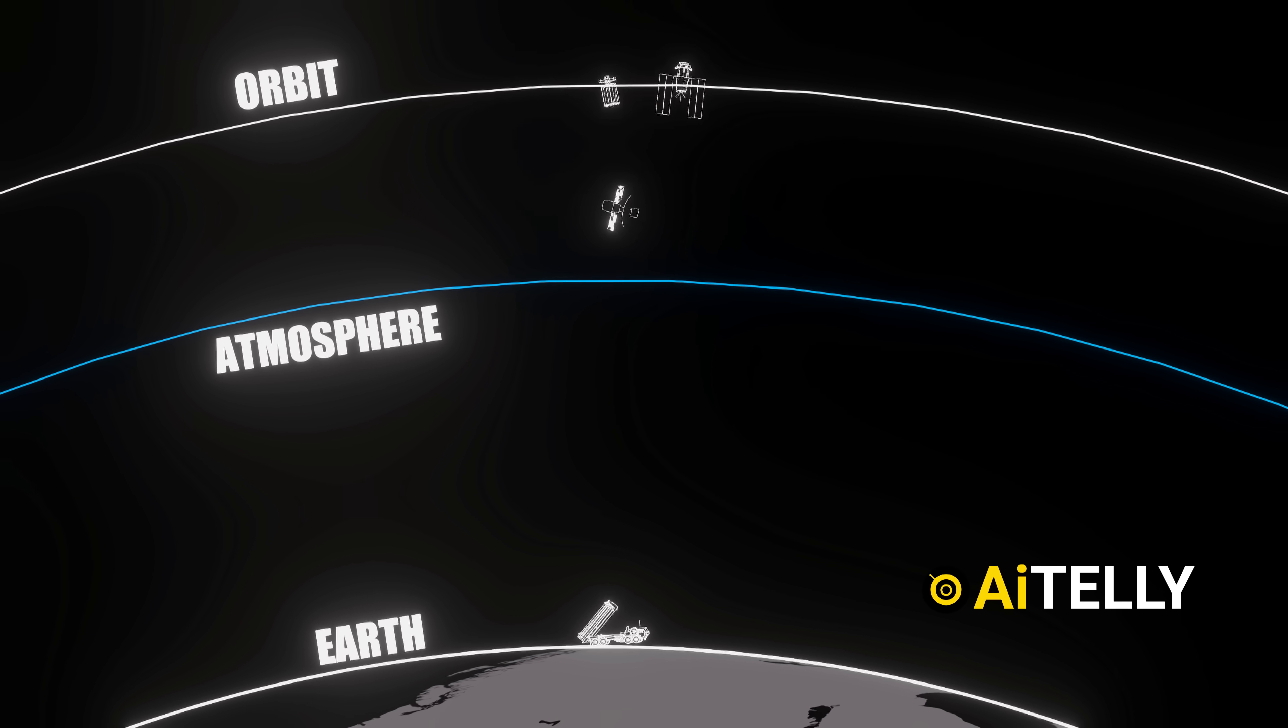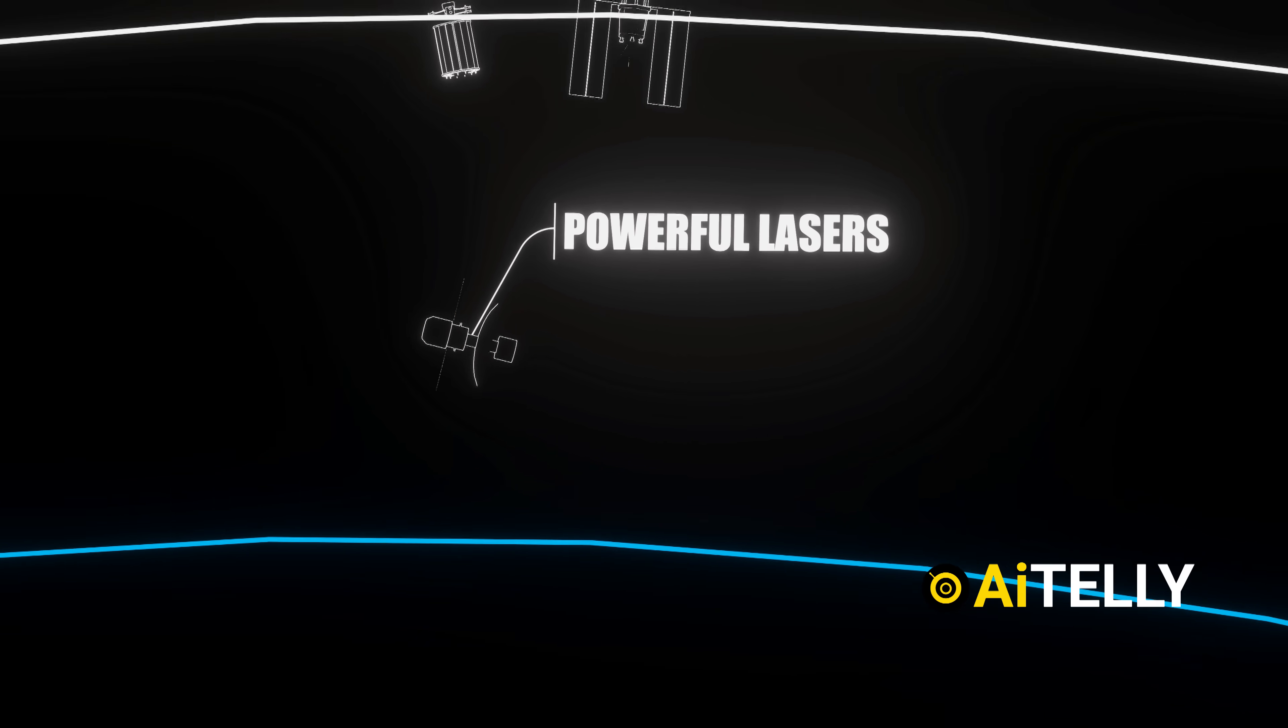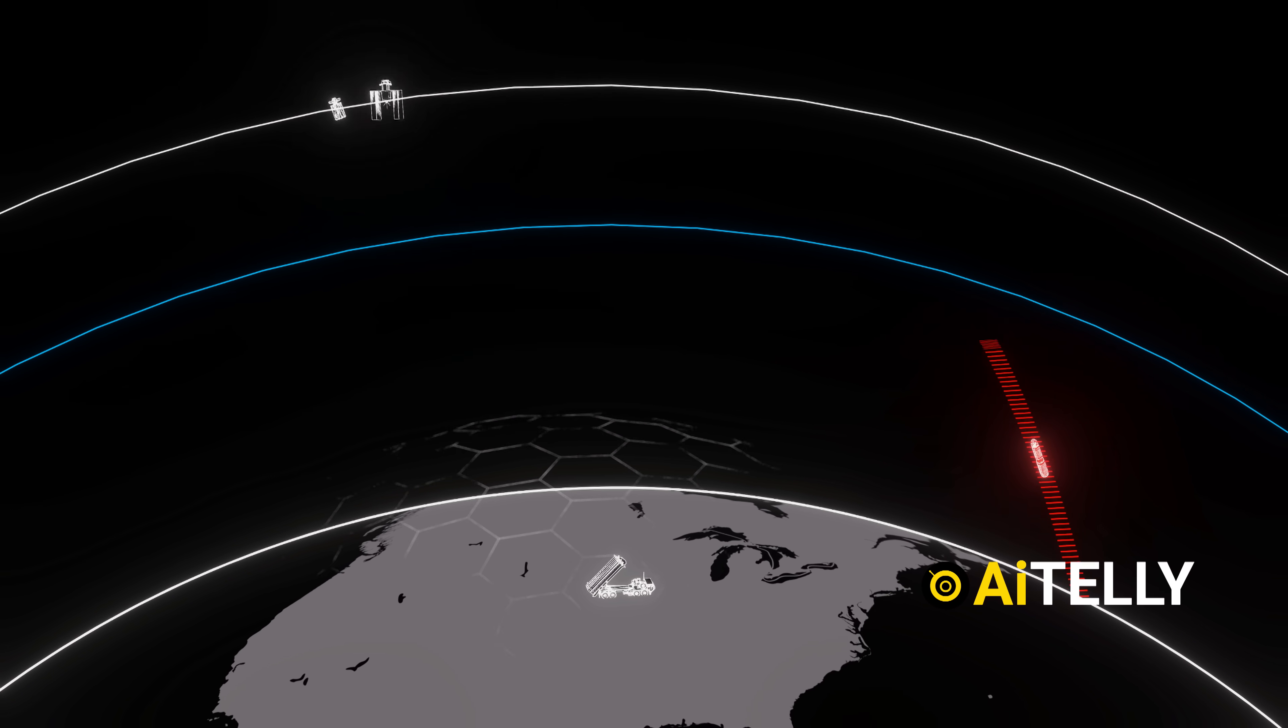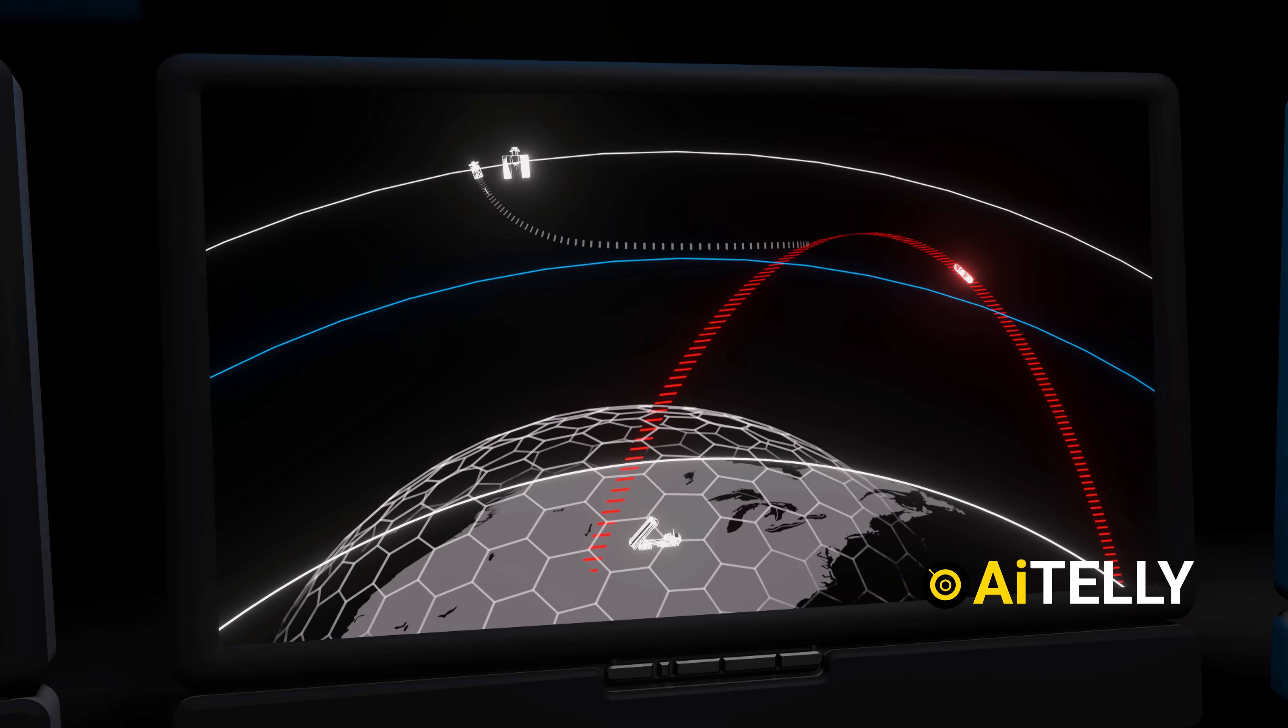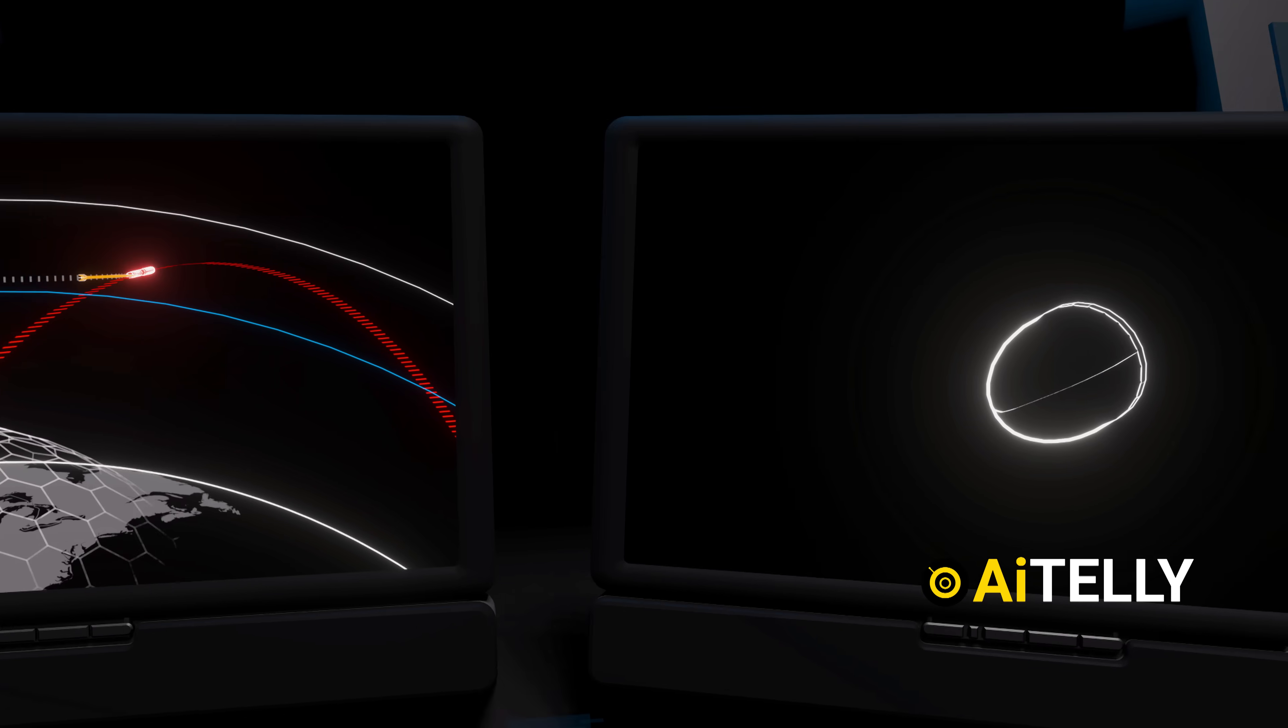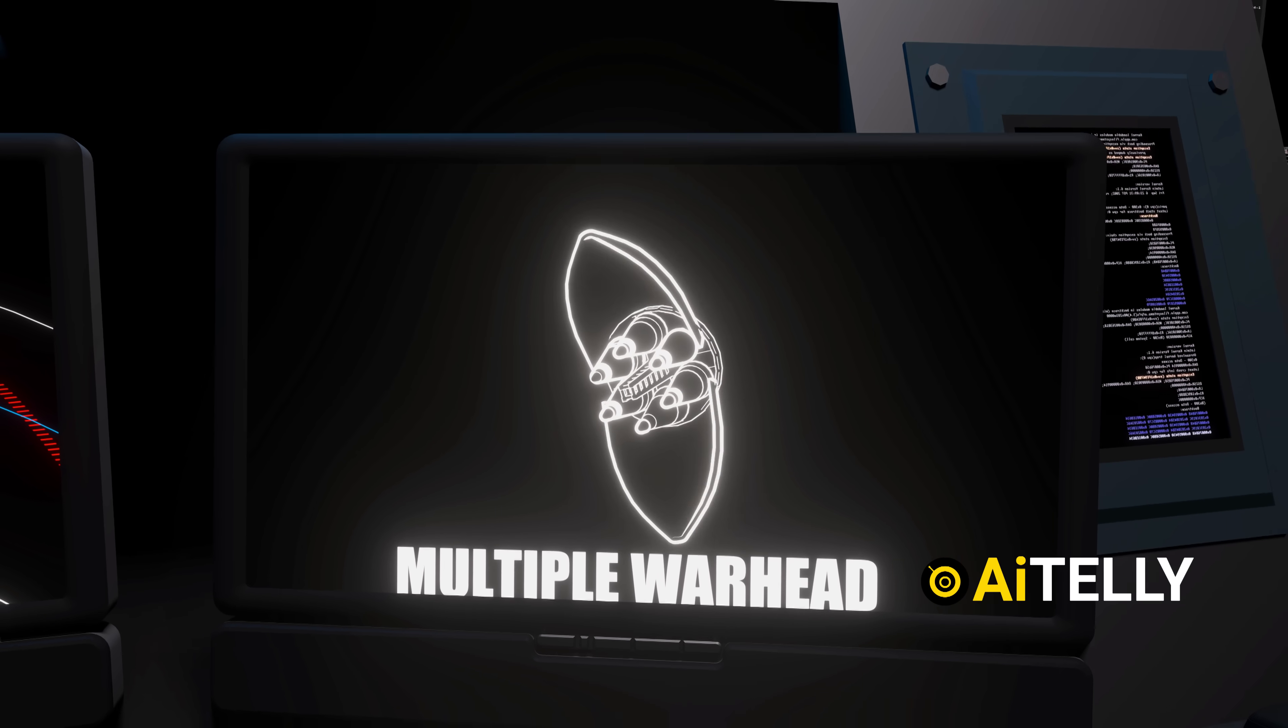The envisioned arsenal includes powerful lasers as well as kinetic interceptor missiles that physically collide with their targets. By targeting hostile missiles at this earliest phase, the system dramatically boosts the odds of a successful interception, potentially stopping threats before they can unleash decoys or multiple warheads.